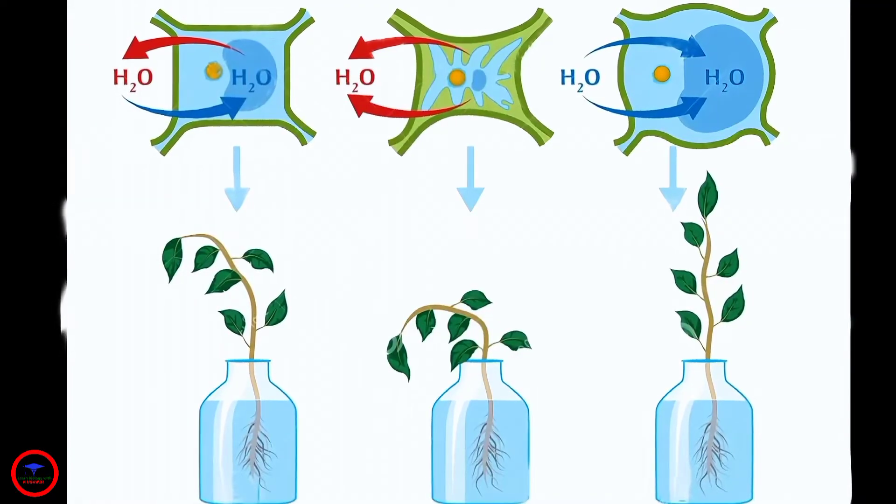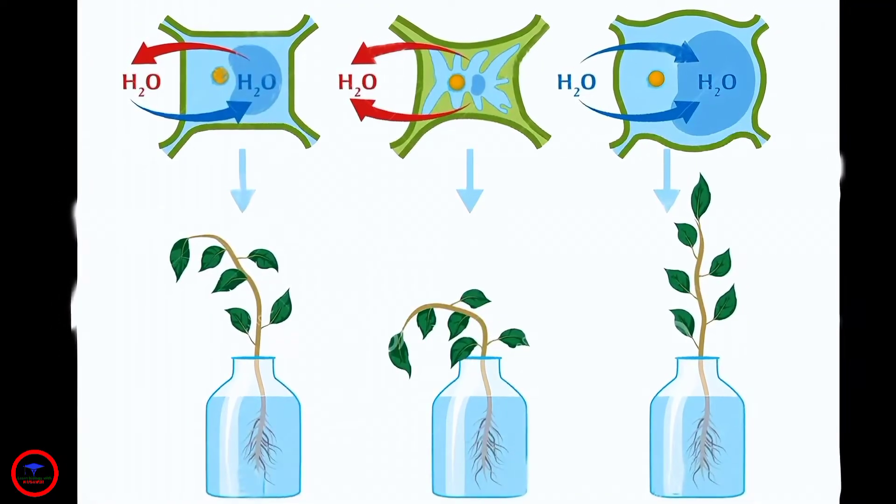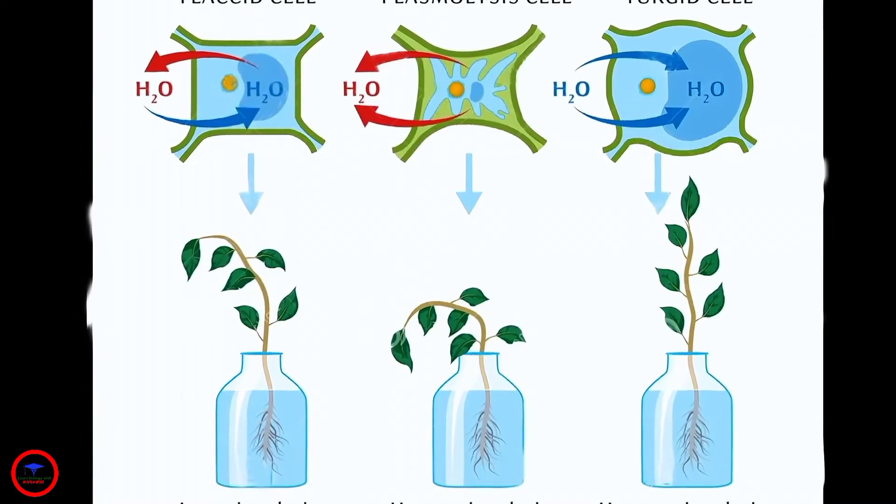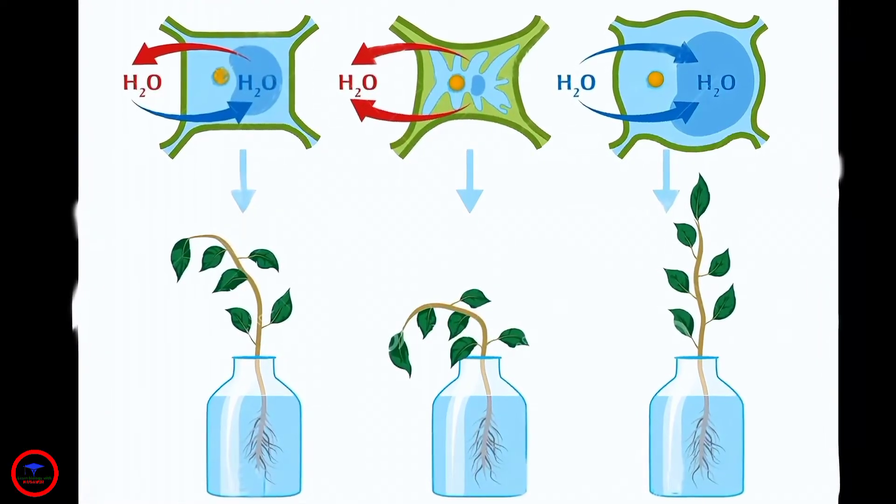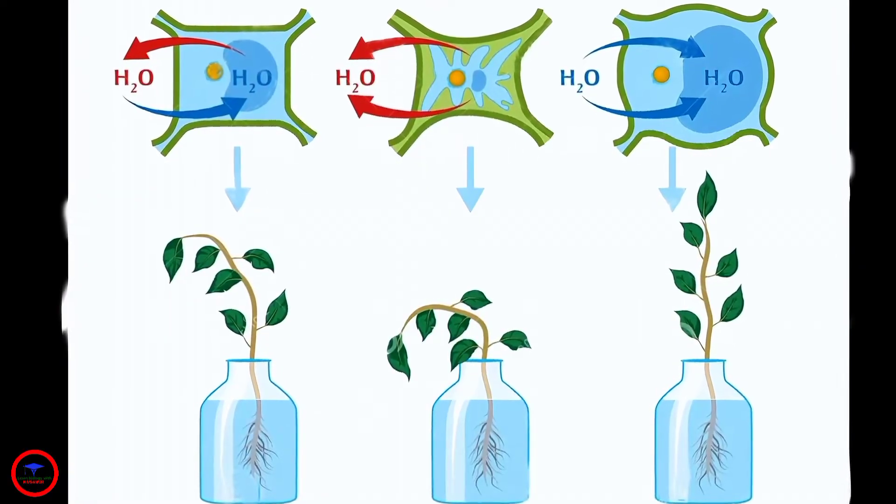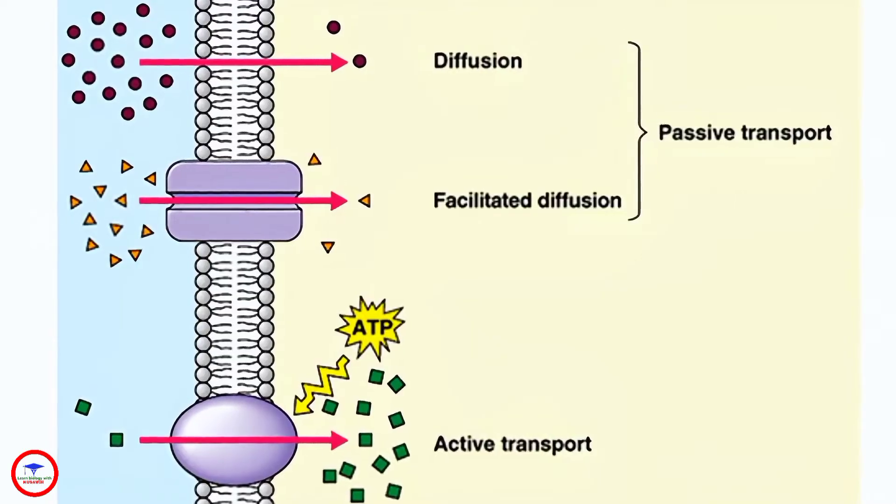Osmosis is a special type of diffusion involving water. It is the movement of water molecules across a semi-permeable membrane from a solution with a high concentration to a solution with a lower concentration.